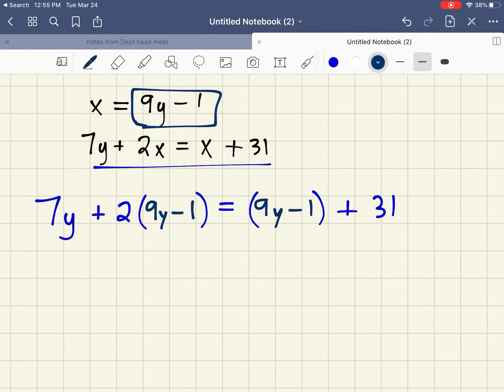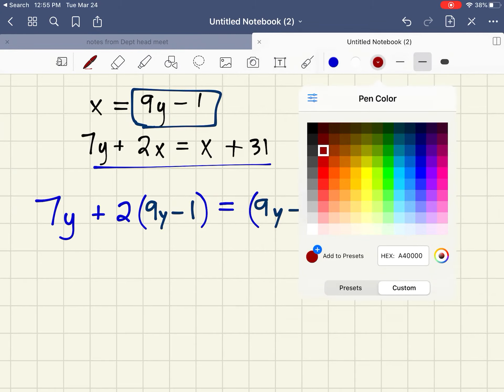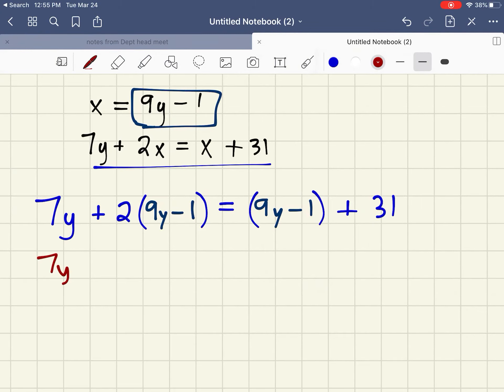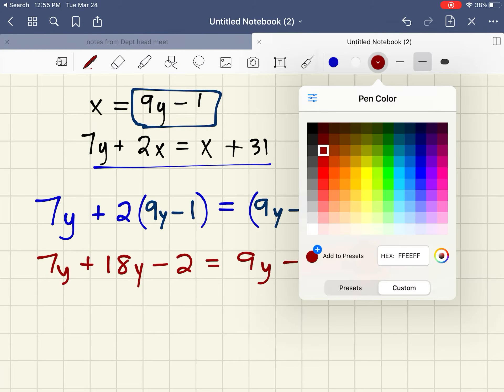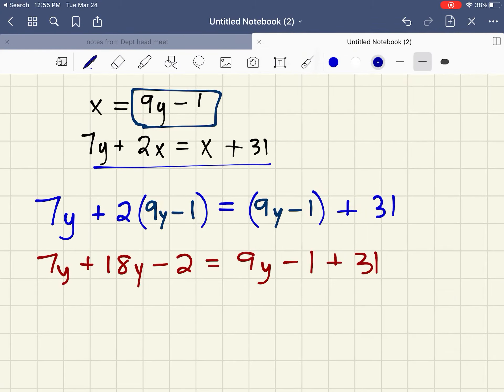I'm going to follow through with my solving skills. I'm just going to first distribute that 2. I don't really need the parentheses on the other side. I'm going to look for some terms to combine. Here it's the y, so I get 25y minus 2. On the other side, it's the negative 1 and the 31. So we have 9y plus 30.